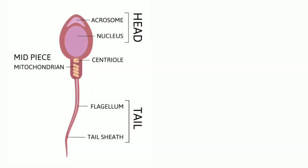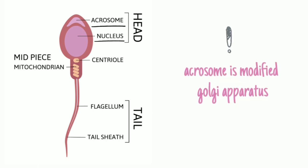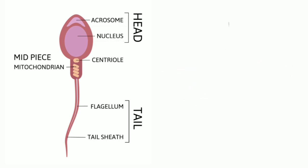The mature spermatozoan has a head, a neck, a middle piece, and a principal piece or tail. The head has a nucleus and acrosome, which is the modified Golgi apparatus containing enzymes that help in penetration of the ovum. The neck has the proximal centriole. The middle piece has the spiral mitochondria. The principal piece consists of axial filaments, which arise from the distal centriole.